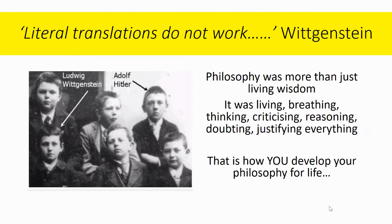One of the most important philosophers from the late 19th and early 20th century was Wittgenstein, who was born in Austria and went to school with another very famous person — there's a copy of the school photograph on the screen. Wittgenstein was very much concerned with the idea that literal translations of words or phrases just do not work.